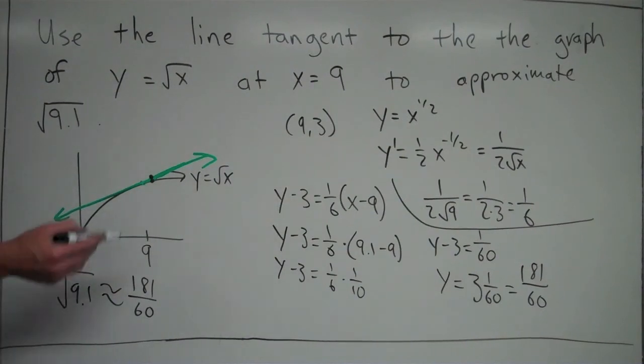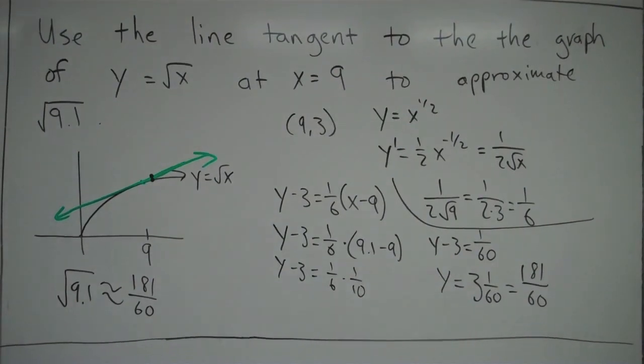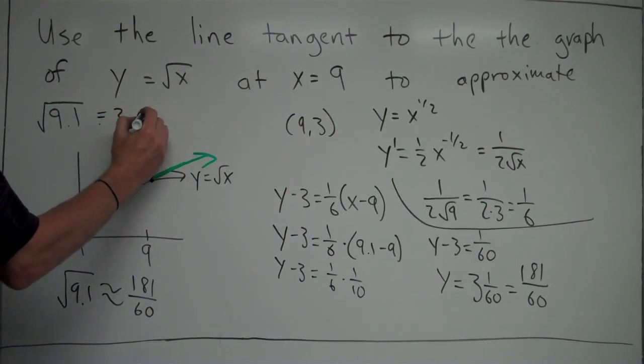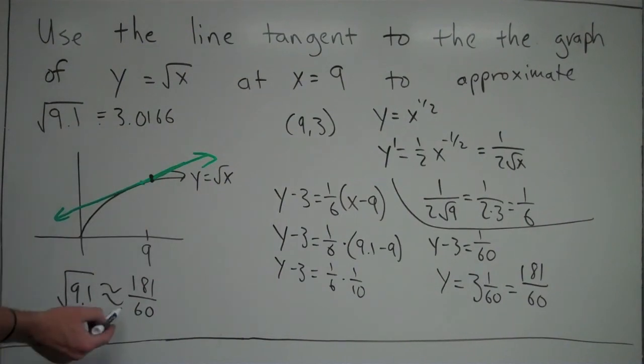That happens to be the value that's on the tangent line, which is close to the value on the √x function. Not exact, but close, so that's an approximation. Just FYI, the actual value of √9.1, since we have the ability to find that with a calculator, is 3.0166. If you divide 181/60, it equals, up to four decimal places, 3.0166. After that it does start to go off, and it's not the same. But you can see it's a very accurate approximation in this case.